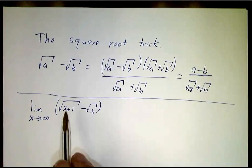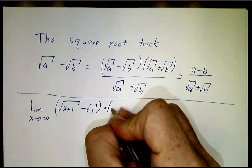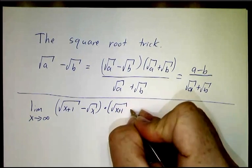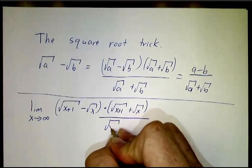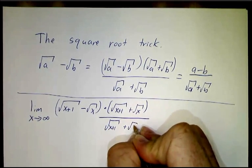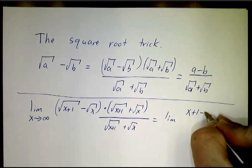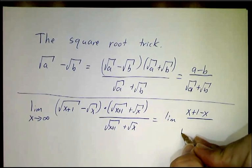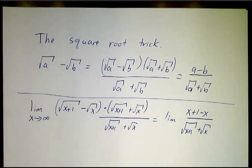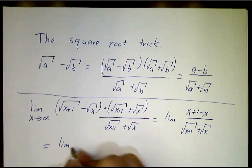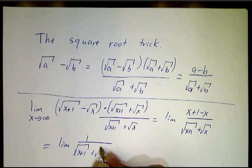So, if you're left with something that looks like a difference of two terms, what you can often do is this trick. And that becomes the limit of x plus 1 minus x over root x plus 1 plus root x. And that's the limit of 1 over root x plus 1 plus root x.